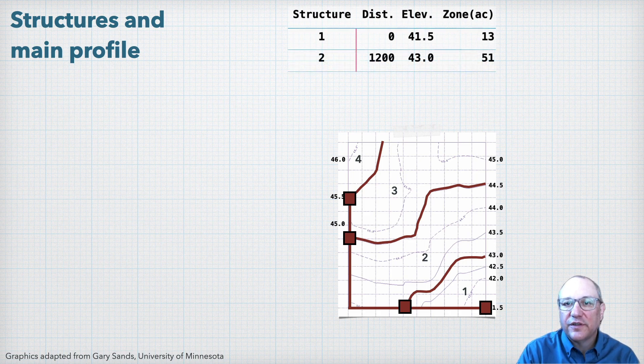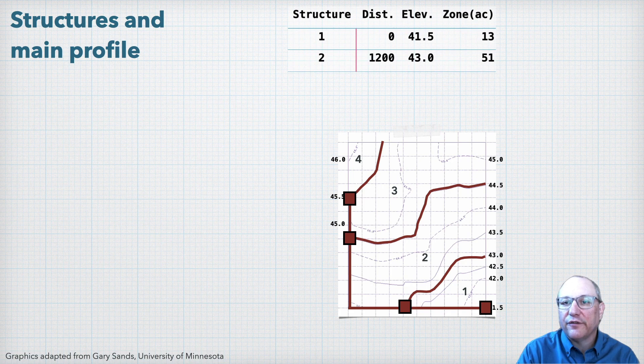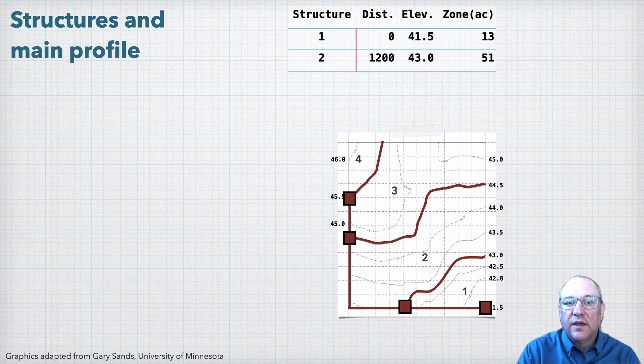Our next control structure is 1,200 feet from the outlet, at a 43-foot elevation, and controls 51 acres. And then so on for our other two control structures.